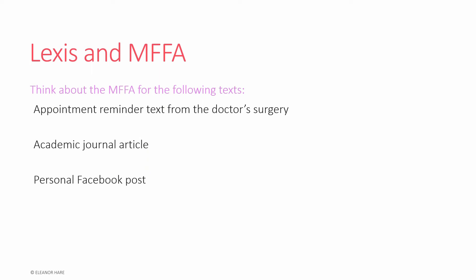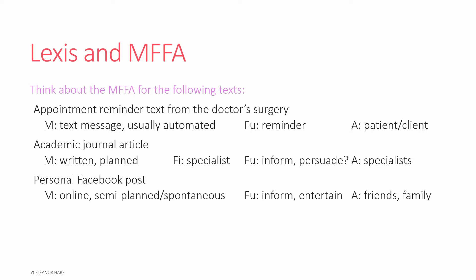Now let's think about the mode, field, function, and audience for the following hypothetical texts. I do not have examples of these texts, but it's a good exercise to do before analysing a text, so that it allows you to think about things you expect, and you can comment on things that do or do not appear. The hypothetical texts are: an appointment reminder text from a doctor's surgery, an academic journal article, and a personal Facebook post. For the reminder text, the mode is obviously a text message, which would be planned and automated via some kind of mail merge.